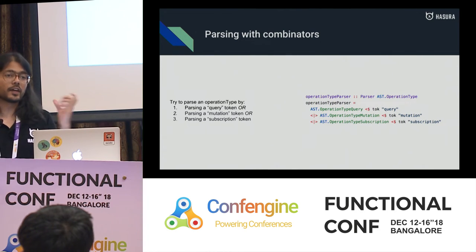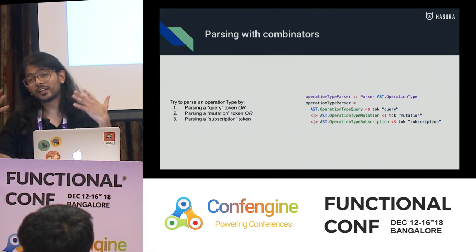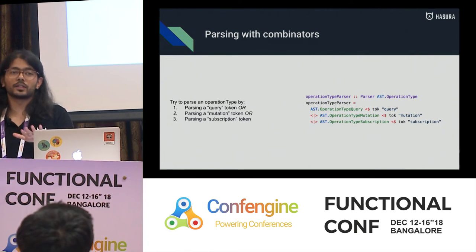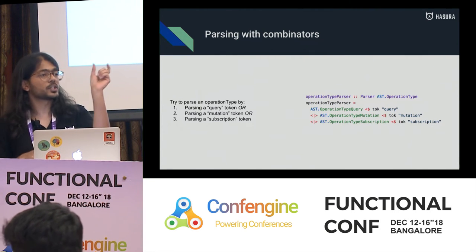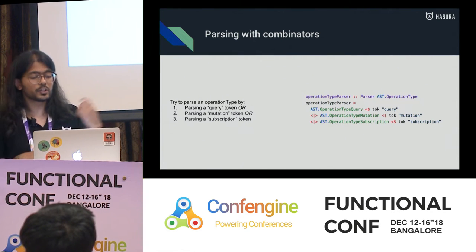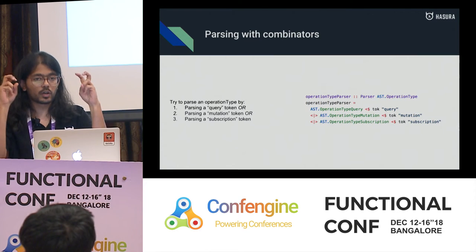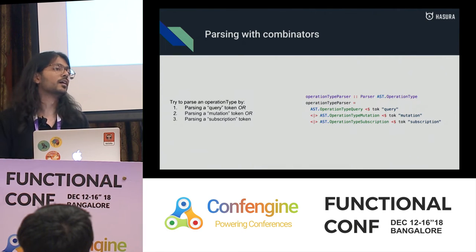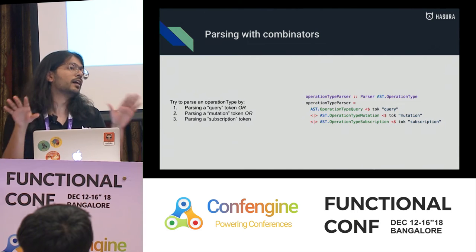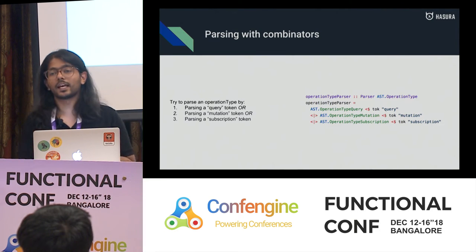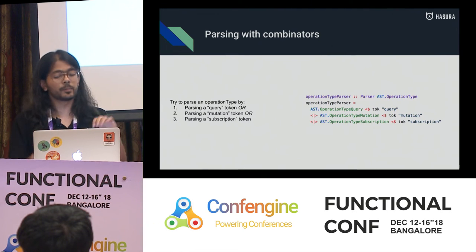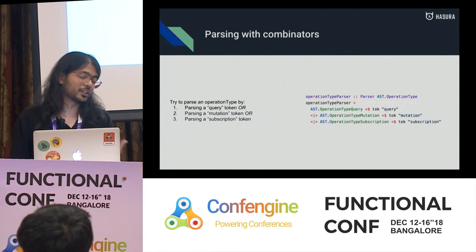Here's the code it takes to figure out whether you're seeing a query, a mutation, or a subscription. You don't need to grok all the syntax — at a high level you're dealing with the concept of operation type. You say: I want to parse the operation type, and I expect a token called 'query', 'mutation', or 'subscription'. That's literally the code you write. The rest of the heavy lifting is handled by parser combinator libraries and tokenizing libraries underneath.